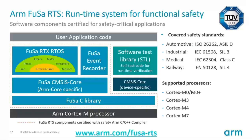Next, choose software components that are already pre-certified for functional safety applications. For that, we have introduced a runtime system for functional safety applications: ARM FUSA RTS. It is a set of software components certified for use in automotive, industrial, medical, and railway applications with the highest safety integrity levels possible for software. FUSA RTS has received corresponding certificates after strict analysis and review by TÜV Süd, a well-known certification organization.